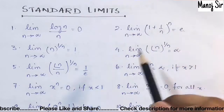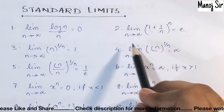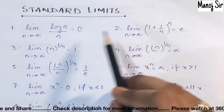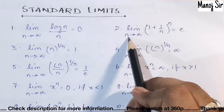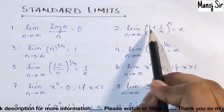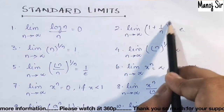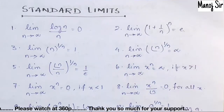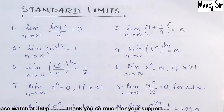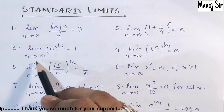Second standard limit: limit n tends to infinity of (1 + 1/n)^n equals e. Please write down all these standard limits in a copy. I repeat — limit n tends to infinity of (1 + 1/n)^n equals e.